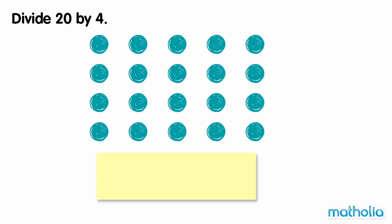Divide twenty by four. There are twenty dots. To divide by four, we can circle groups of four dots then count the total number of groups.